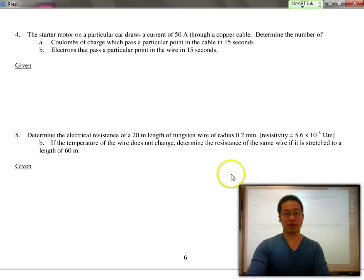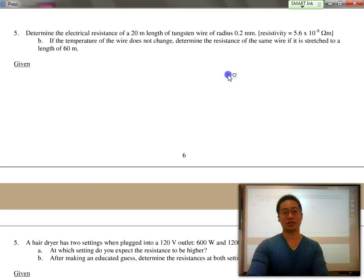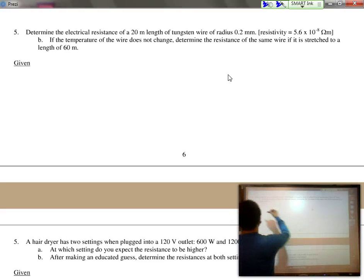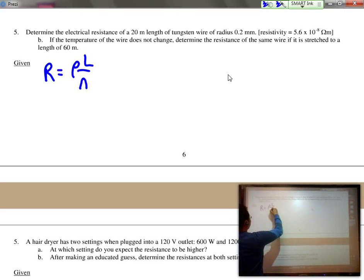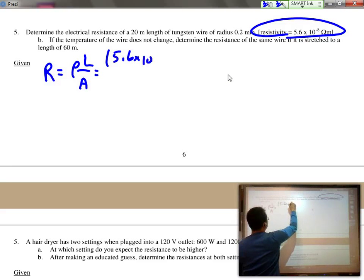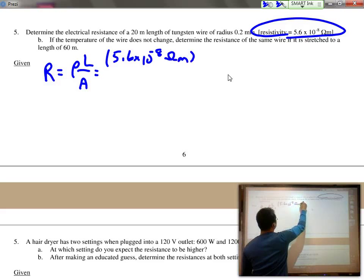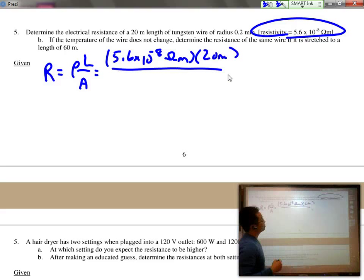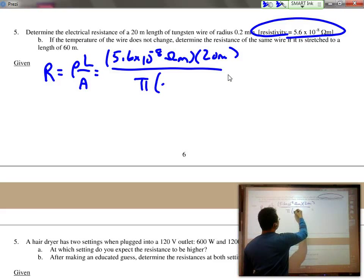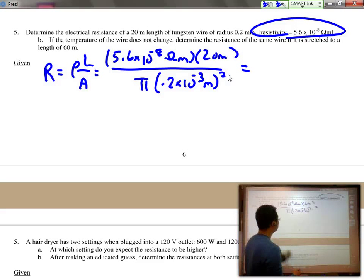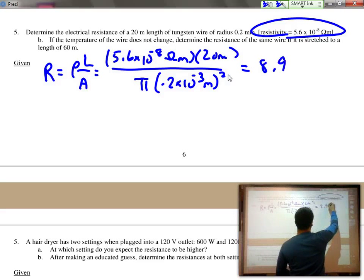And number five over here, they ask us to determine the electrical resistance again. So we'll do one more practice problem. R equals rho L over A. They state that the resistivity is 5.6 times 10 to the negative 8 ohm meters times 20 meters in length, divided by the area. In this case, they give us the radius to be 0.2 millimeters. So it's going to be pi times 0.2 times 10 to the negative 3 meters squared, which equals 8.91 ohms.